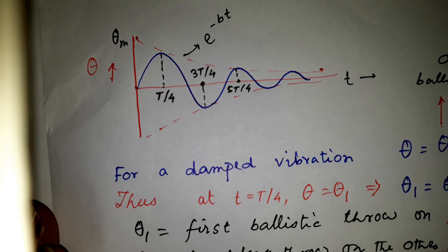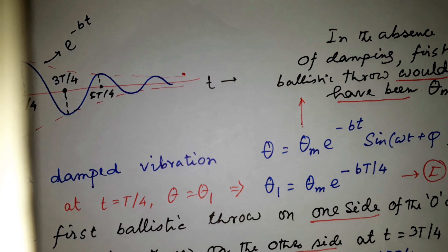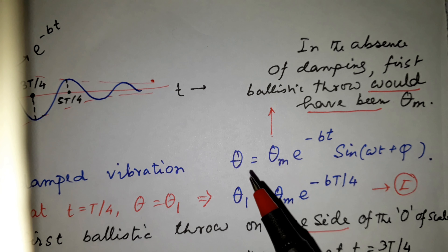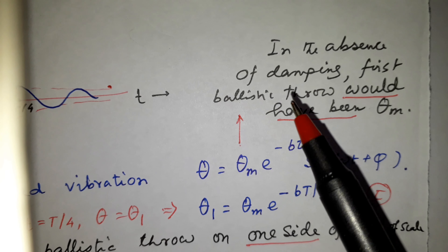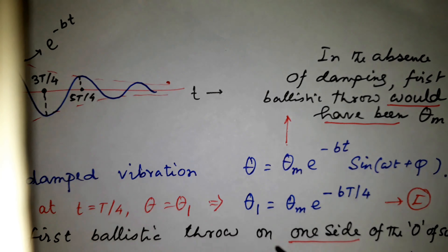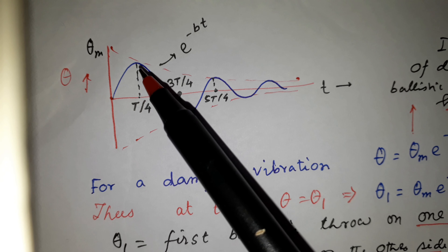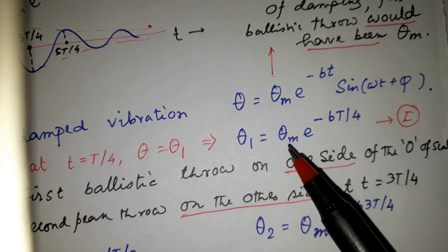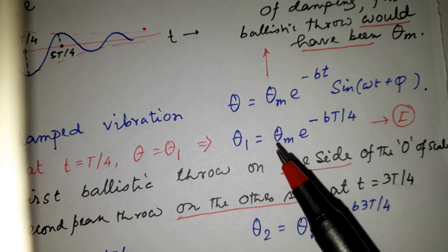Due to electromagnetic damping as well as mechanical damping, the fast throw of the ballistic galvanometer is damped. For a damped vibration, theta equals theta_m times e to the power minus bt times sin(omega t plus phi). In the absence of damping, the first ballistic throw would have been theta_m. At t equal to T/4, theta_1 is the amplitude, given by theta_1 equals theta_m times e to the power minus b times T/4.